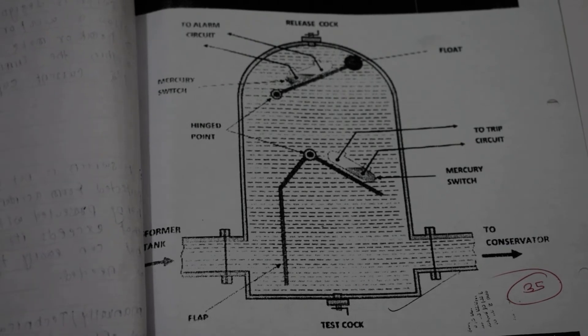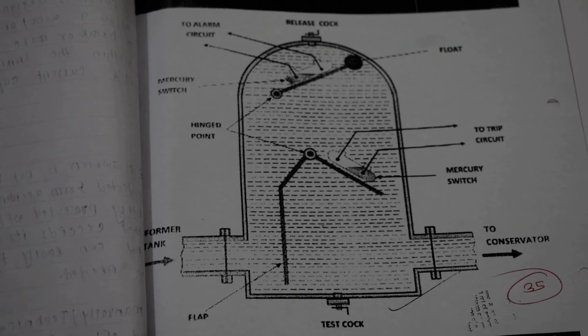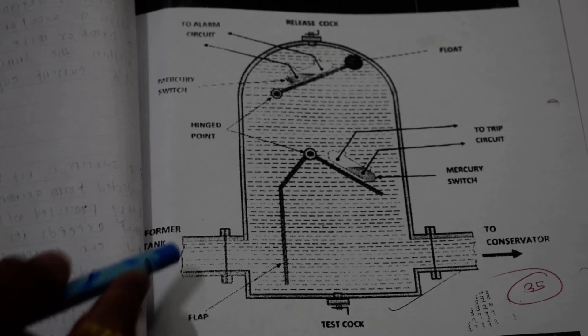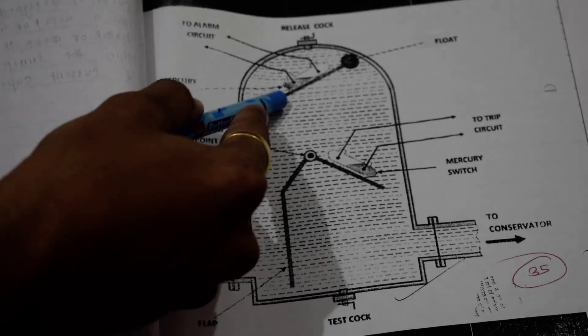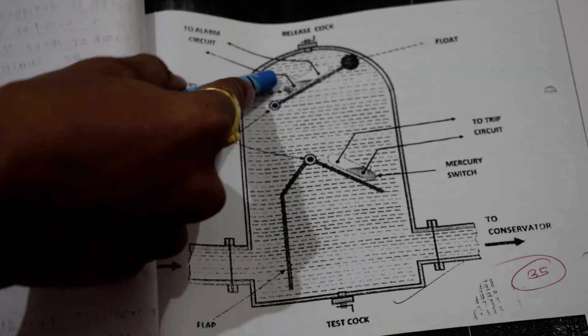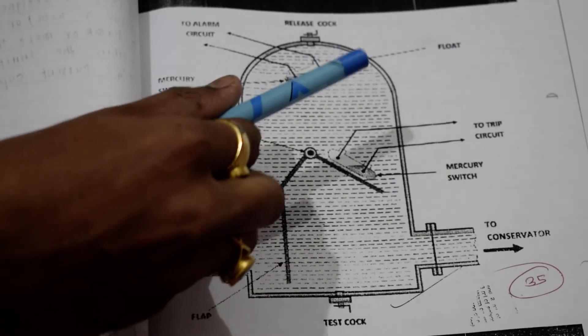What happens is sometimes there are minor faults in the transformer. Because the transformer is oil-filled, heat forms vapor. The vapors come out of the transformer, and the float which is floating here strikes as the vapor flows.